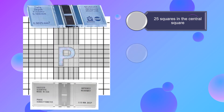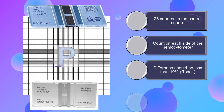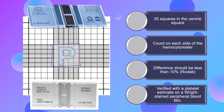Platelets are counted in the central square of the hemocytometer, meaning all 25 intermediate squares in the central square are used for counting. Platelets are counted on both sides of the chamber, and the difference between the two counts should be less than 10%. The platelet count obtained should then be verified with a platelet estimate.